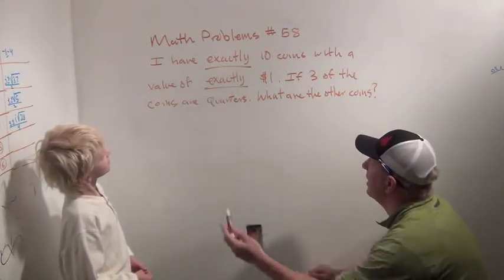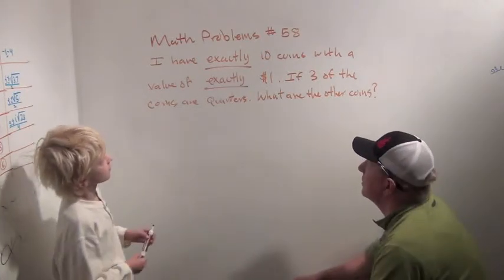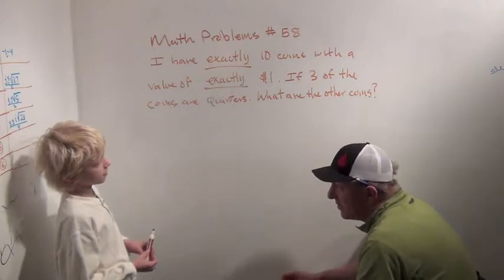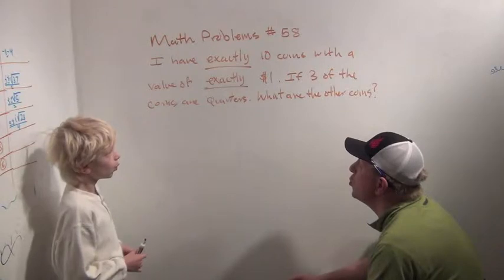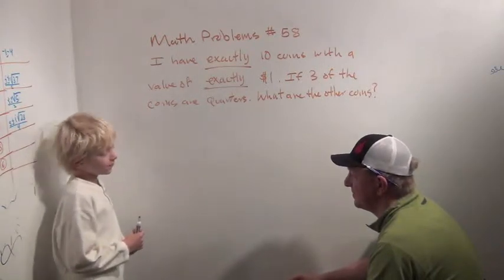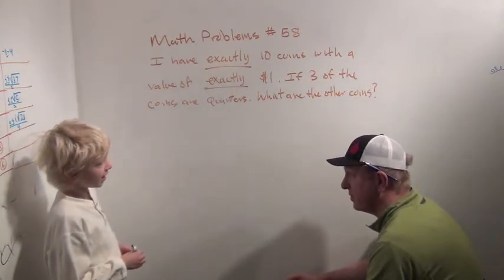Yeah. Okay. I have exactly ten coins with a value of exactly one dollar. If three of the coins are quarters, what are the other coins? Do you understand the problem, first of all?